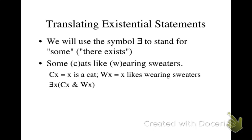These are joined with an AND because an existential statement affirms both of the predicates. It says there exists a thing such that it's a cat and it's wearing a sweater. This is what's called a positive existential statement.